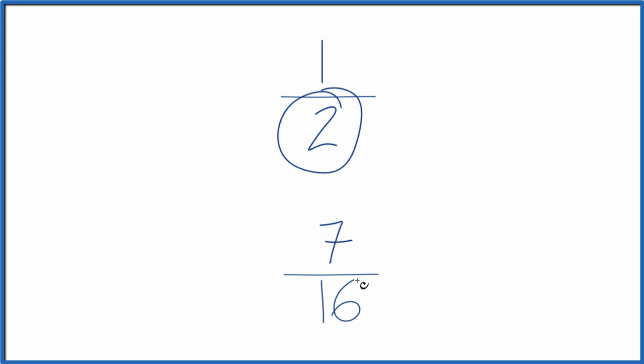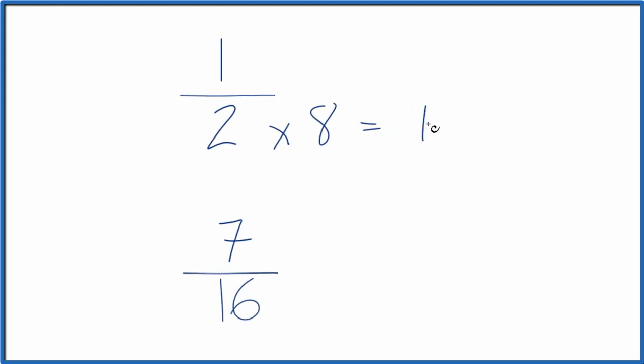Something that both 2 and 16 will go into evenly. In this case I can see that 2 will go into 16. So I could just multiply 2 times 8 and that equals 16.